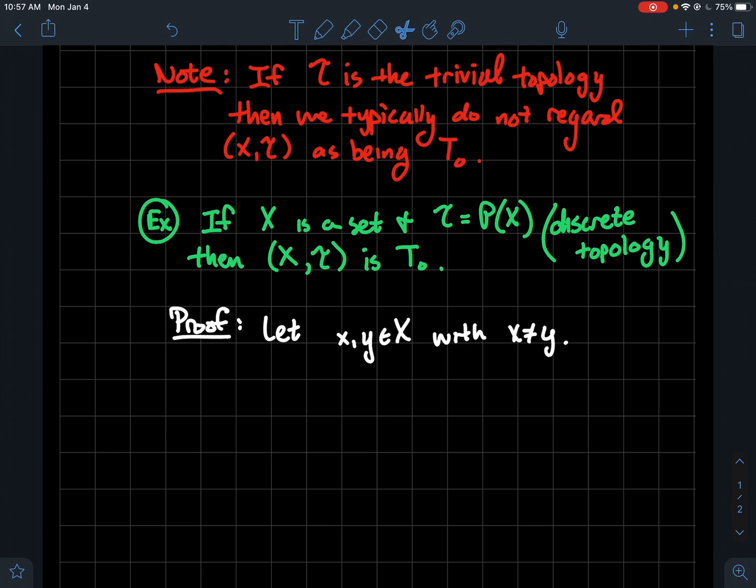So what should we do? Let's take x and y to be distinct points in X. τ is the discrete topology, meaning you pick any subset of X and it's open. Why don't I let U be just the singleton {x}? So because τ is the discrete topology, I know that the singleton {x} is open. So it's an element of τ.